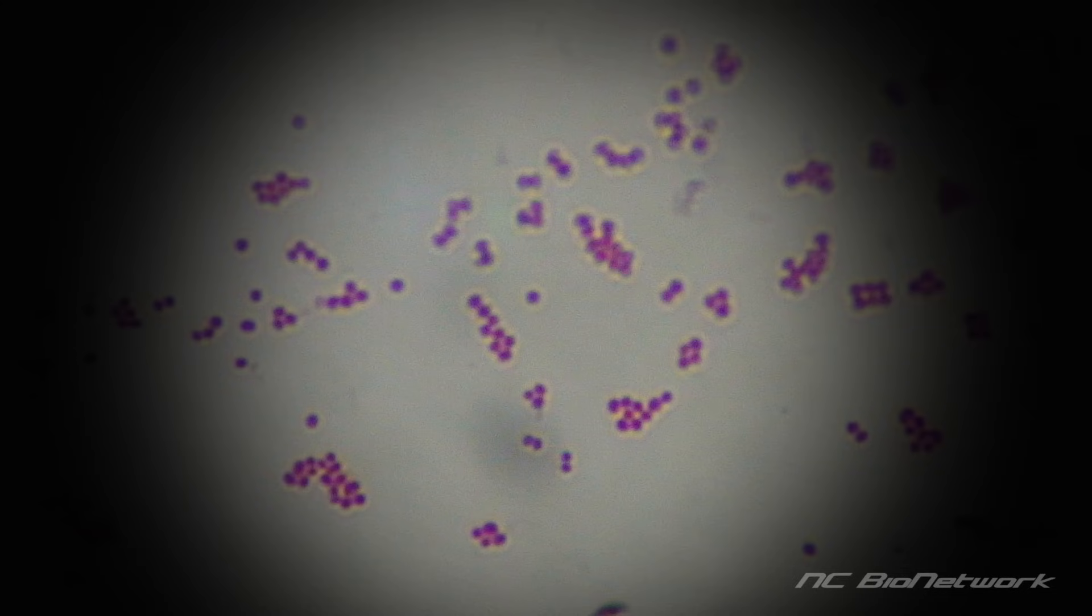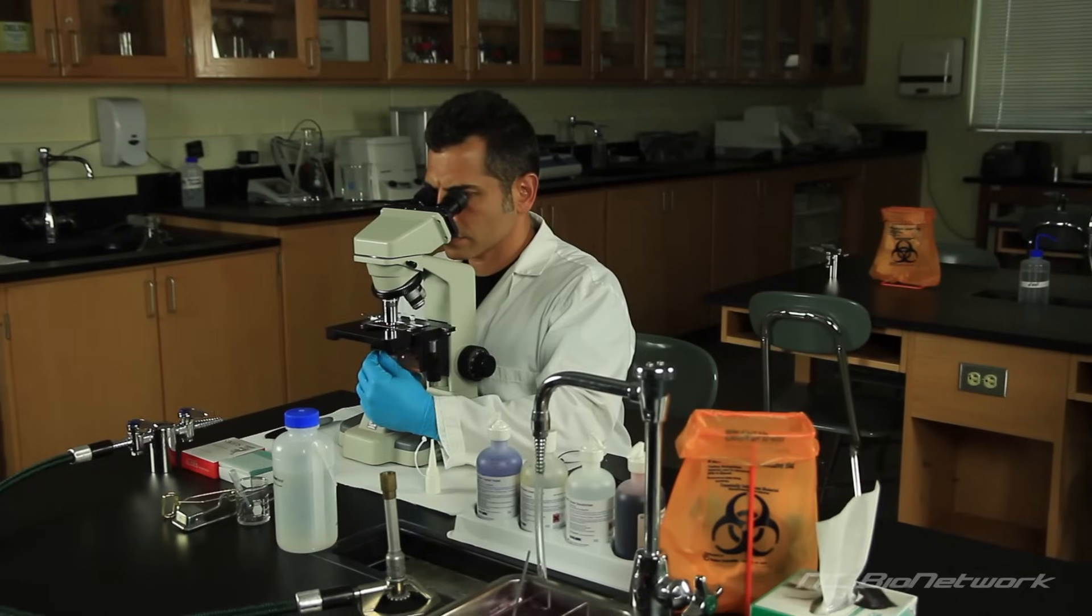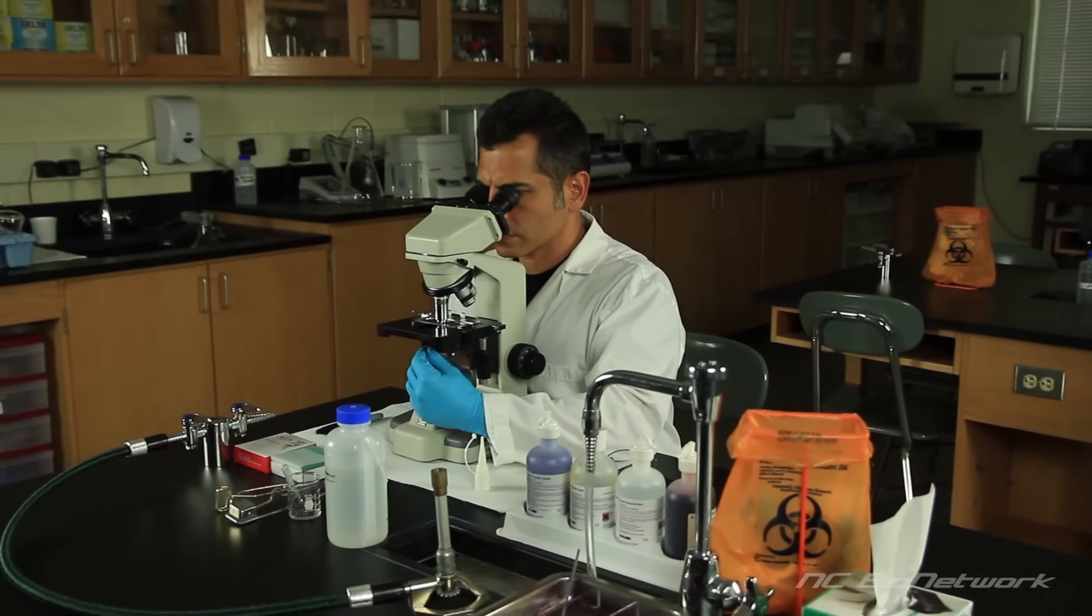The staphylococcus cells look like small red balls. Sketch the image in your lab notebook. Now you're ready to go into the lab and perform a simple stain.